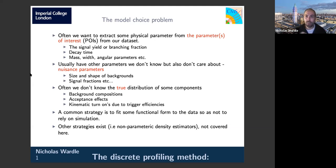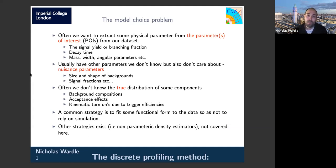We also have other parameters we don't know exactly but also don't care about — in statistics language these are nuisance parameters. For us these are typically things like the size and shapes of particular background contributions, or the composition of the signal. We have to specify them somehow in our model, and often we don't actually know what the true underlying distribution of some components is.